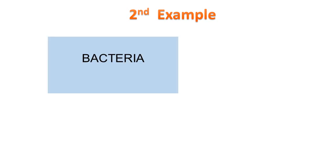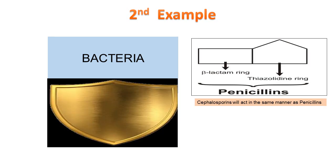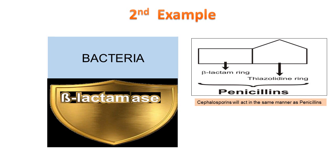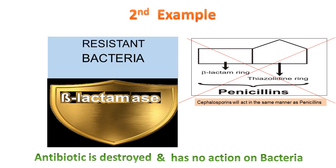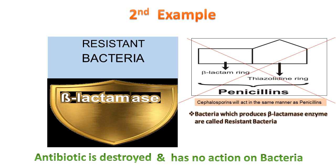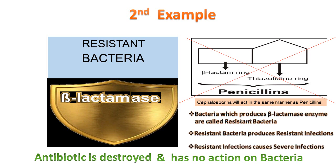Consider the second example. Bacteria will develop mechanisms to overcome the action of antibiotics. To protect itself, bacteria produces an enzyme — enzymes are suffixed as '-ase' — which destroys the beta-lactam ring. Therefore, this enzyme is called beta-lactamase. This beta-lactamase will destroy the beta-lactam ring of penicillin, so the antibiotic is destroyed and has no action on bacteria. We say the bacteria has developed resistance to the antibiotic. Bacteria which produce beta-lactamase enzyme are called resistant bacteria, and they cause severe resistant infections.